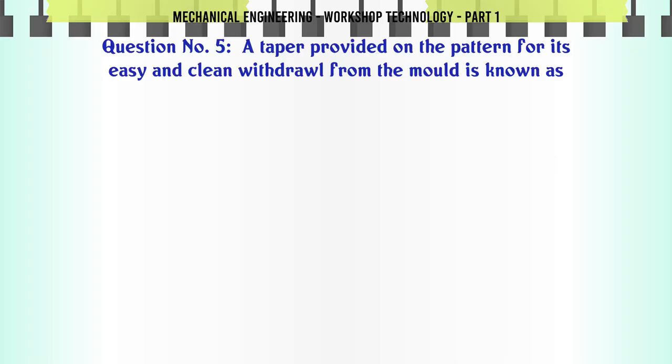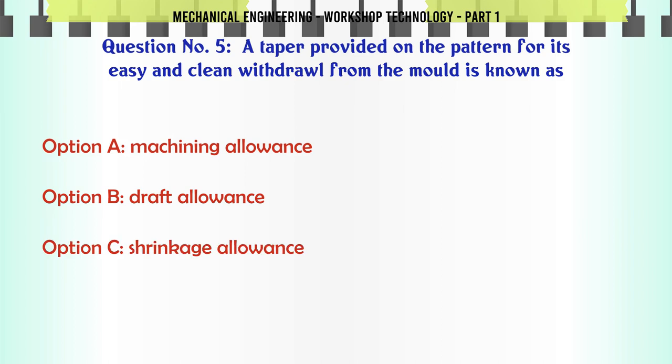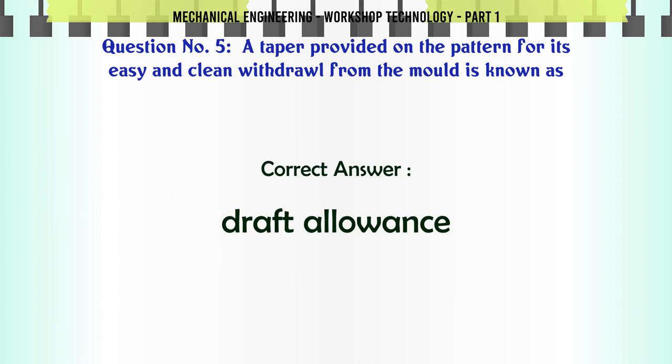A taper provided on the pattern for its easy and clean withdrawal from the mold is known as: A. Machining allowance. B. Draft allowance. C. Shrinkage allowance. D. Distortion allowance. The correct answer is: Draft allowance.